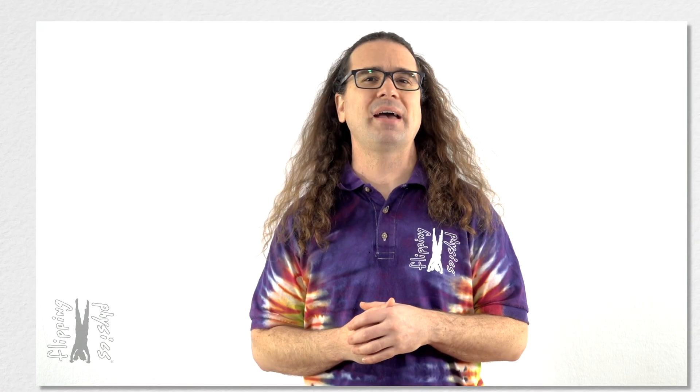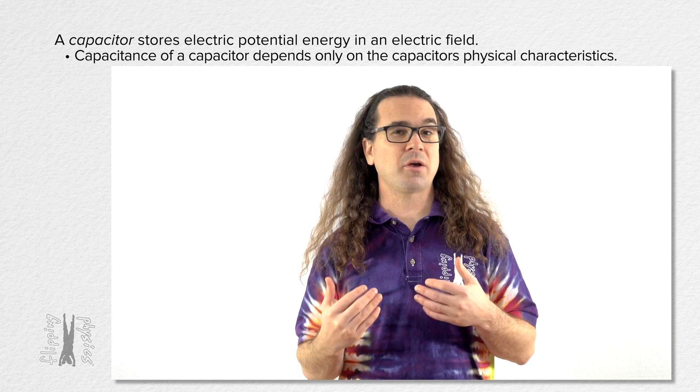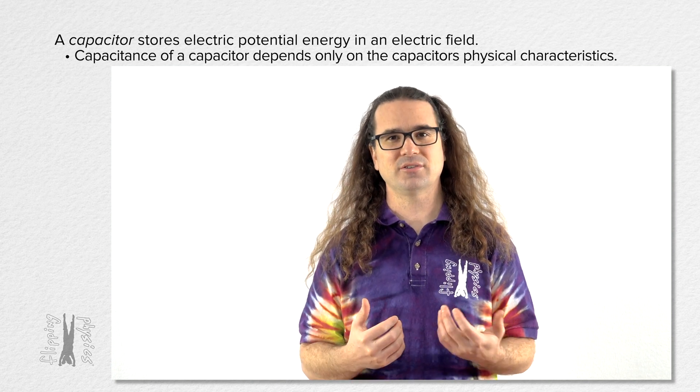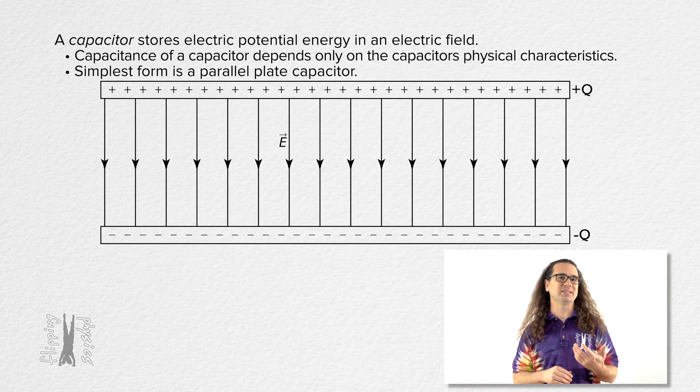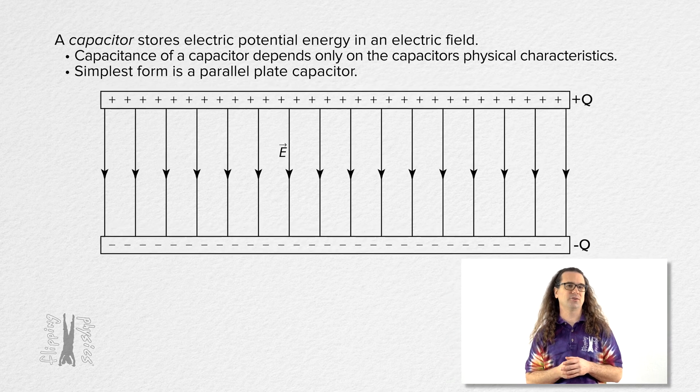The capacitance of a capacitor depends only on the capacitor's physical characteristics. For example, the capacitor's shape and material used to separate the plates of the capacitor. The simplest form of a capacitor is a parallel plate capacitor. The two plates have equal magnitude charges but opposite sign and the electric potential energy is stored in the electric field of the capacitor.